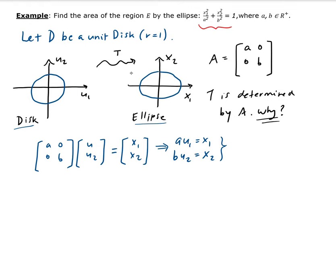We're going to get (a*U1)^2/a^2 + (b*U2)^2/b^2 = 1. The a squared will cancel out and b squared will cancel out. That leaves us with U1^2 + U2^2 = 1. This is the equation of a unit circle in terms of U.